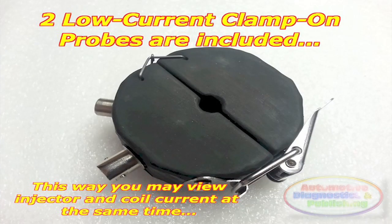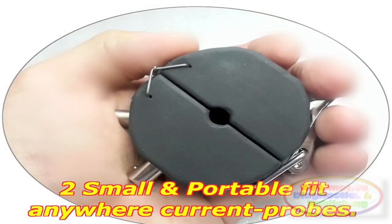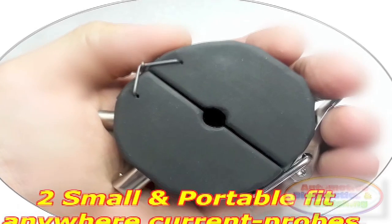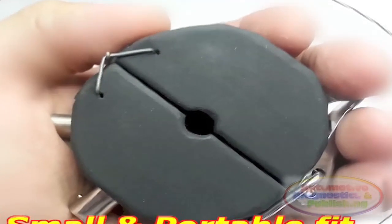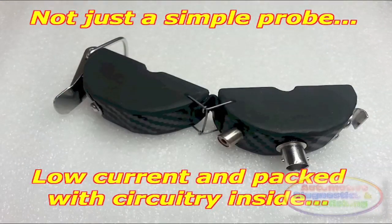The toroidal low current probe for the Scope 1. Low current probes are the most powerful additions to modern automotive oscilloscopes. The Scope 1 Automotive Engine Analyzer and Oscilloscope is not an exception. The toroidal low current probe, which looks like a donut shaped device, is a very advanced piece of equipment.